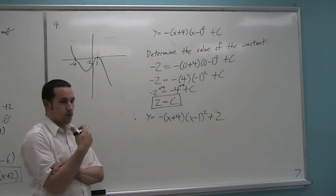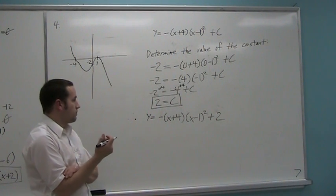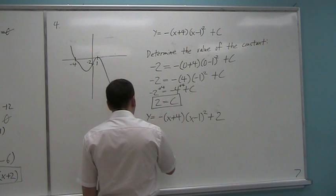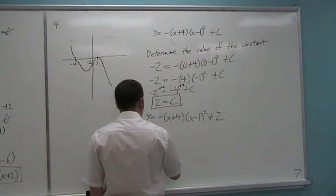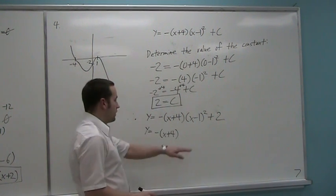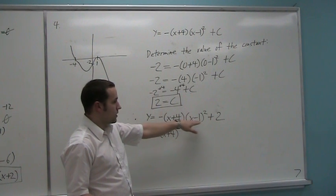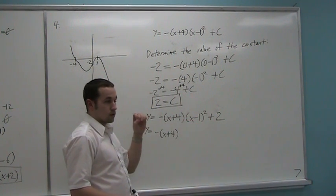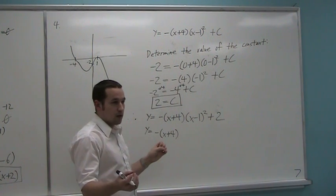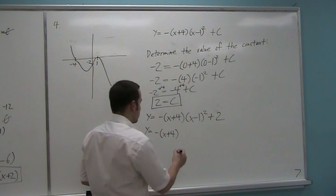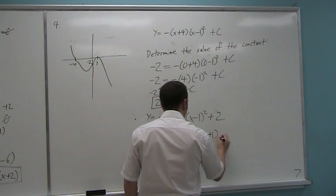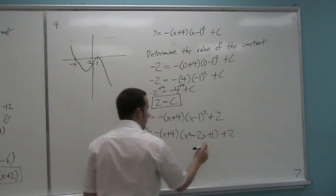Now the only thing left to do is just to expand and simplify. That means basically just to multiply it all out. So I get y equals negative, and I keep this x plus four. And then using foil, expand x minus one squared. If you're good in your head doing these things, then just do it in your head. If not, write it on the side of the piece of paper, expand it, and then put it back in. And I can do this one in my head. I know it's going to be an x squared minus two x plus one. And then I tack again my plus two on the end.